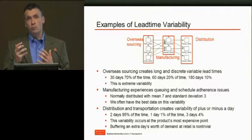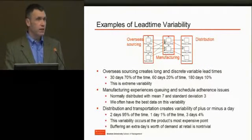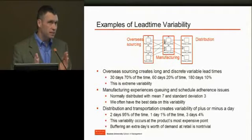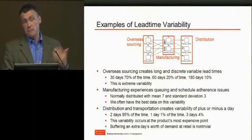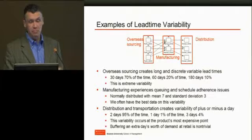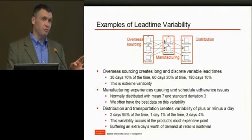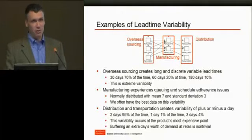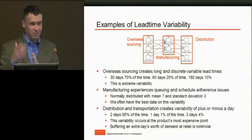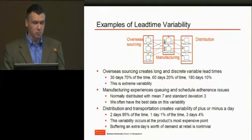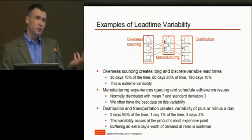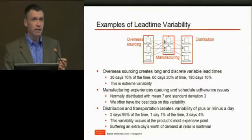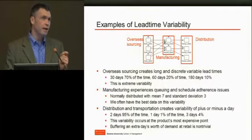When we think about the distribution portion of the supply chain, here is actually where there's very little volatility, but it has a very big impact. Typical times might be that it takes two days 95% of the time, maybe a day 1% of the time. But if it doesn't get there in two days and it gets there in three days 4% of the time — even though it's very small — it has a very big impact.